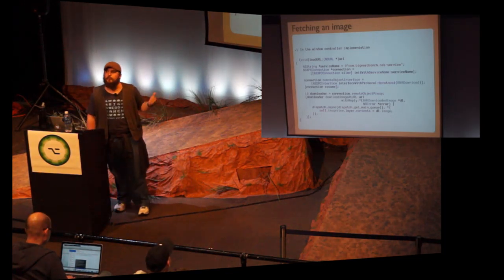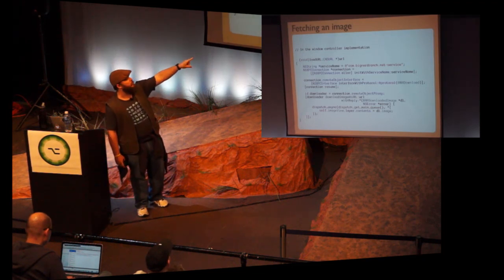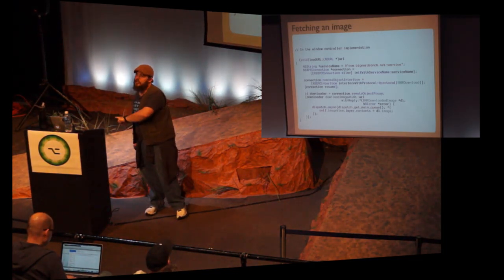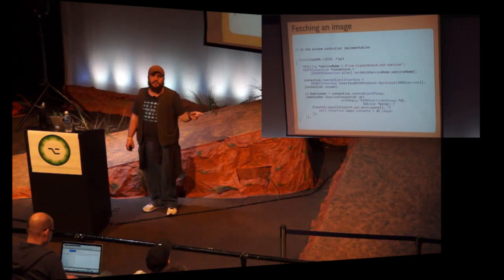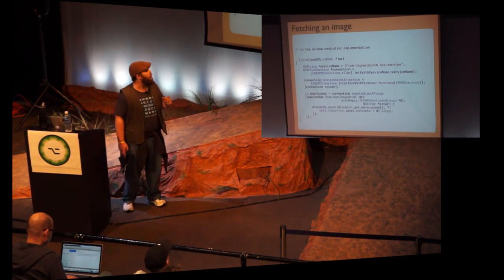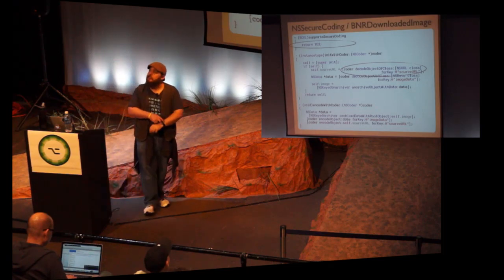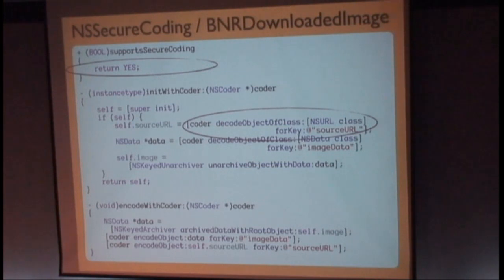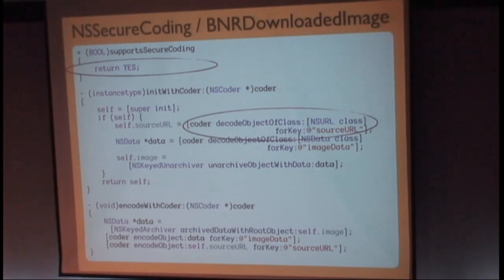The downloader needs to implement the method downloadImageAtURL:withReply: — that's the only method in our download protocol wrapped with our interface with protocol method. You can have any number of arguments in a message declared for use with an XPC service. Optionally the last argument can be a block executed by the distant object as a reply — what XPC calls a reply block. You can pass arbitrary objects back and forth through this XPC tunnel between processes, as long as they conform to NSSecureCoding. NSSecureCoding extends NSCoding by requiring you implement supportSecureCoding returning YES, and use decodeObjectOfClass:forKey: instead of decodeObjectForKey: — this allows your object to check that objects have not been tampered with in flight by a man-in-the-middle attack.